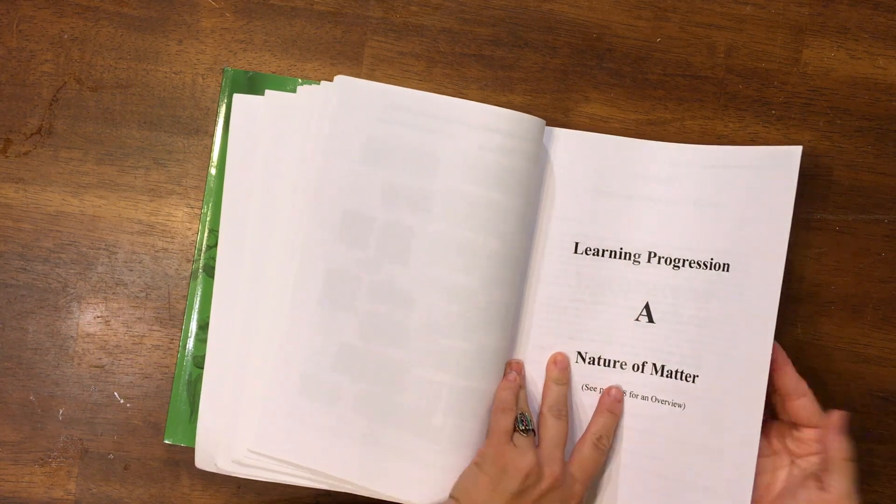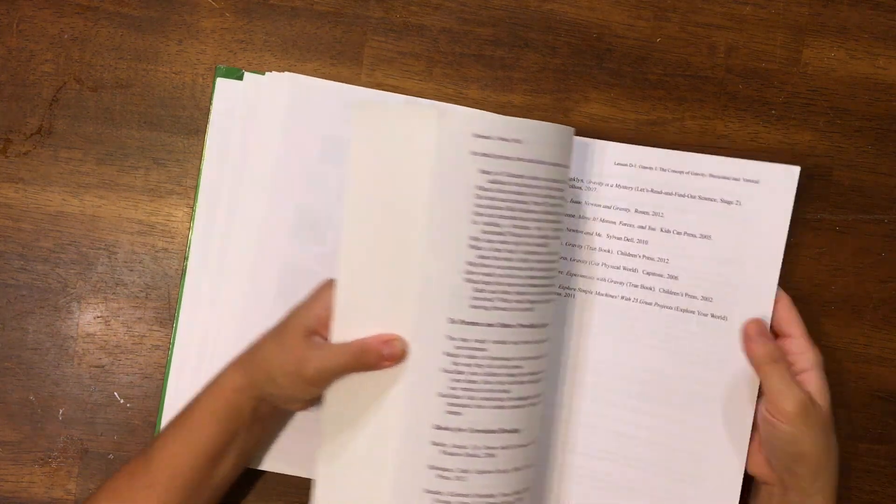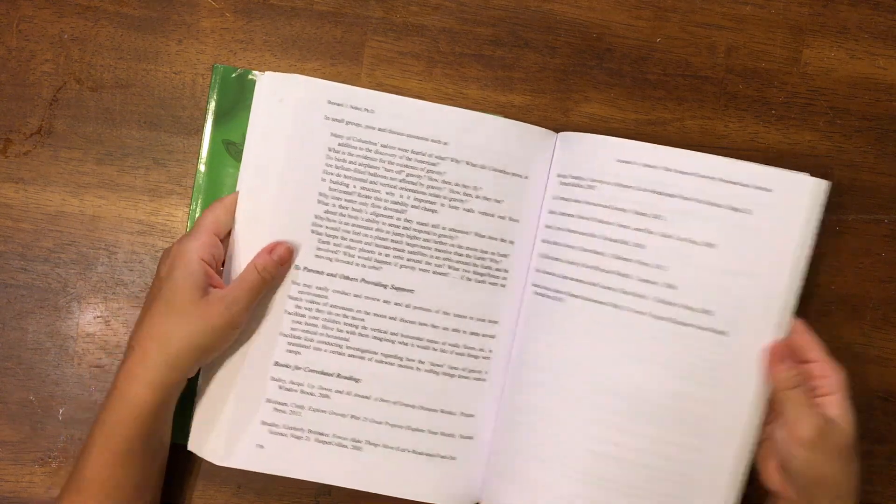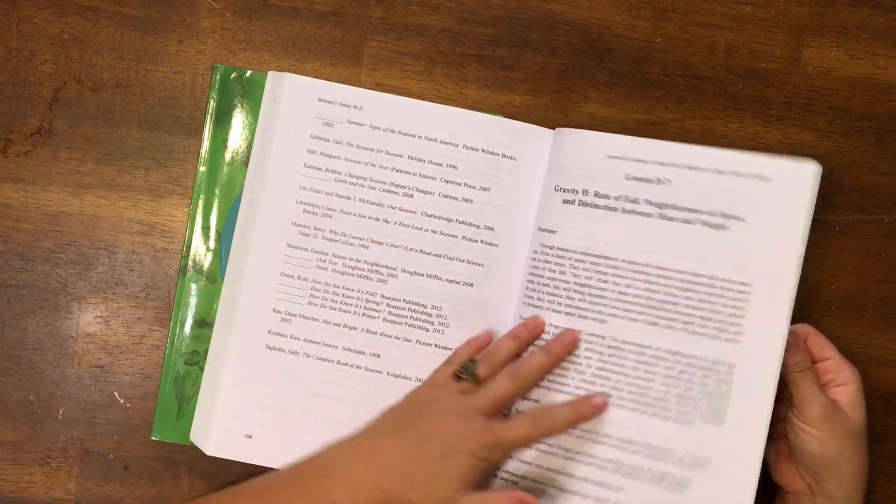So the first forty pages are purely for the adult to read, get acquainted with the curriculum. And then also, I wanted to point out that back here in the appendix.